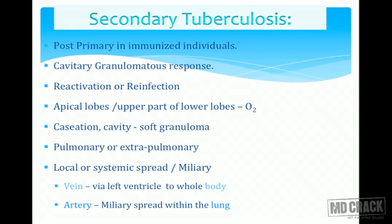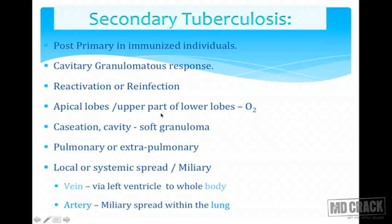Secondary tuberculosis in immunized individuals can produce a cavitary granulomatous response due to reactivation or reinfection. The apical lobes of the lungs are most commonly affected because the upper lung is better oxygenated. There can be extensive caseous necrosis and cavity formation — we call these 'soft granulomas,' and once they undergo fibrosis they become 'hard.' Pulmonary and extra-pulmonary tuberculosis can occur, with systemic spread called miliary tuberculosis. Spread can occur through veins via the left ventricle to the whole body, or through arteries within the lung as miliary spread.